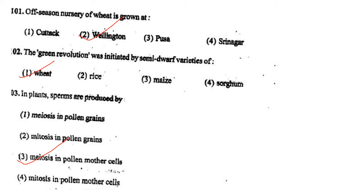Next one: Off-season nursery of wheat is grown at option 1, Katak; option 2, Wellington; option 3, Pusa; option 4, Srinagar. Answer is option 2: Wellington.